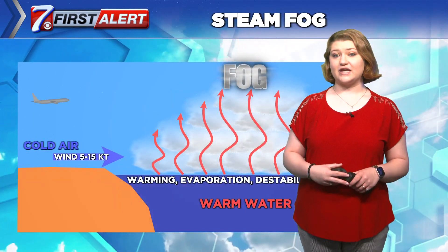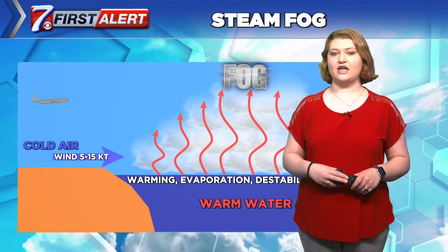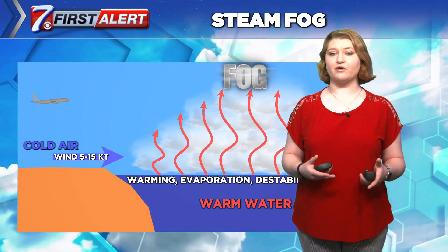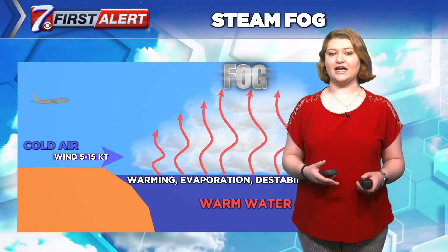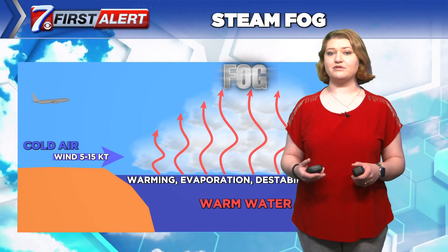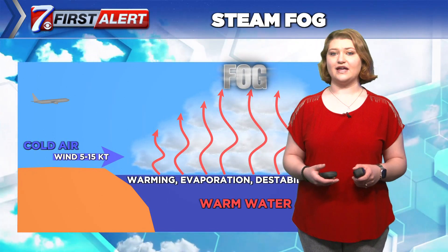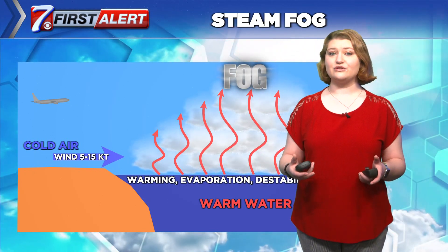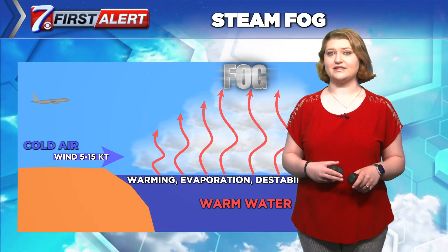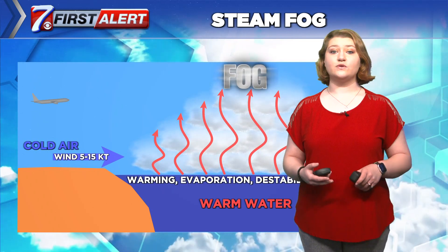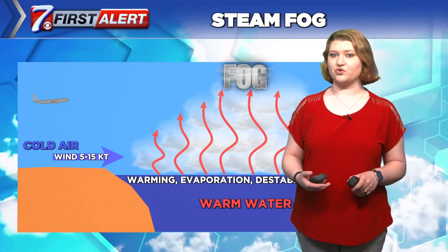Steam fog occurs when cold air moves over warm water. Evaporation increases the dew point temperature, and shallow convection then results from conduction heating. There is a shallow layer of absolute instability. This is the only fog type that is the result of unstable air. Air cools to saturation by expansion.